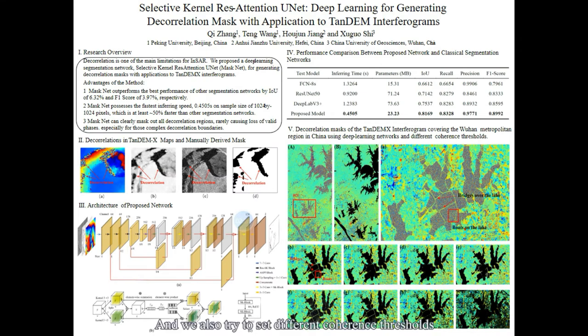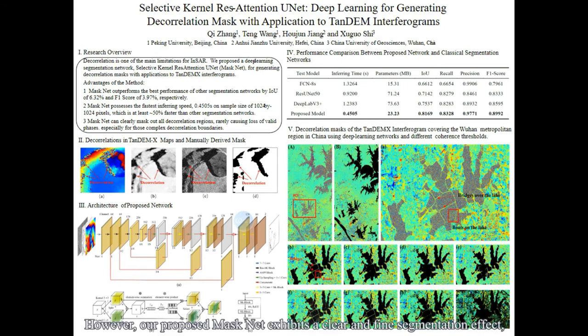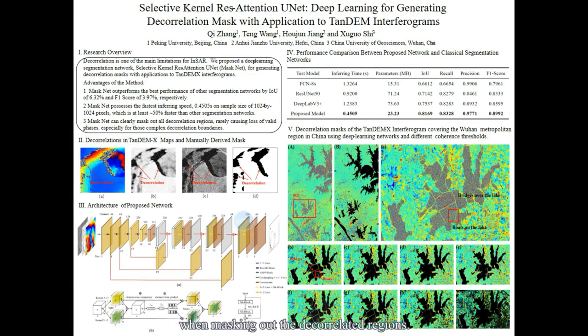We also tried setting different coherence thresholds to mask out the decorrelated regions, but it is difficult to strike a balance between masking out the decorrelated pixels and keeping valid phases, because of the wide coherence range of the ground objects. However, our proposed MaskNet exhibits a clear and fine segmentation effect, keeping nearly all the valid phases of bridges and lake banks when masking out the decorrelated regions.